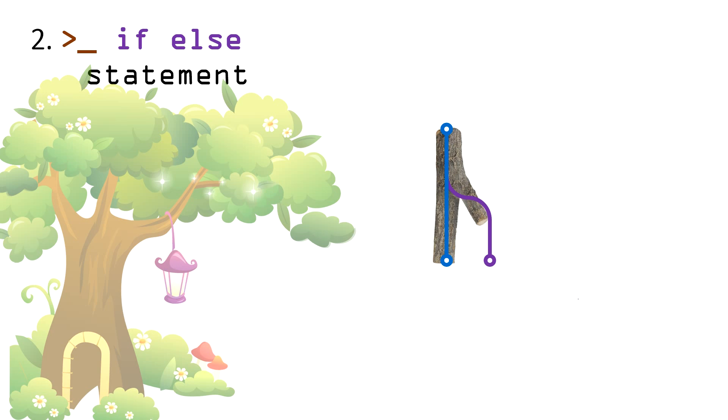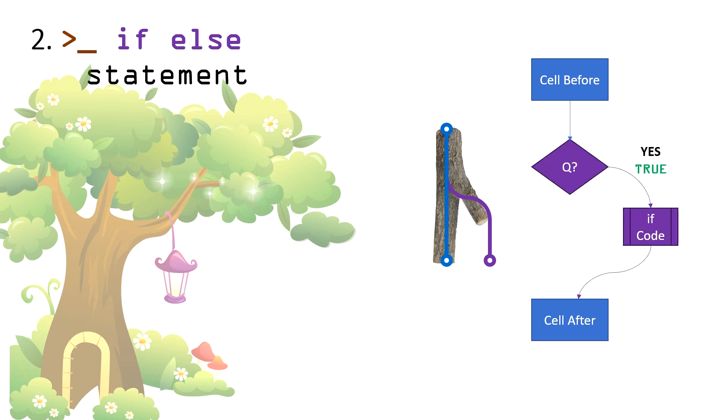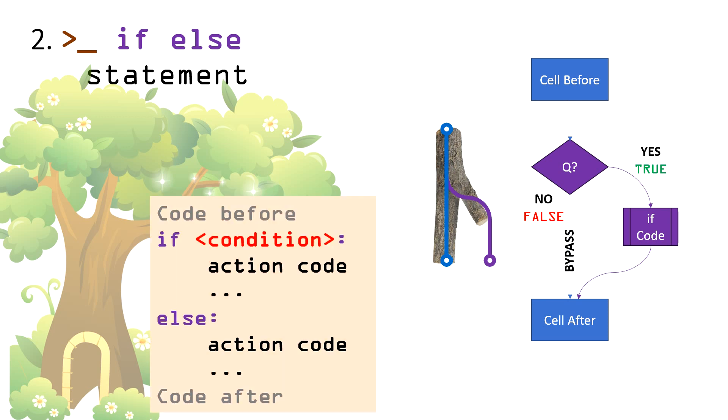So we have cell code before the if statement and code cell after it. And in between, the if condition question along with the true path. And in case of false answer, we just escape everything and went to the next cell code. Now with the second type of if statement that we call if-else statement, we will have the capability to execute also a code in false answer instead of just bypassing, and we will call it else code.